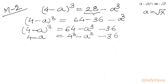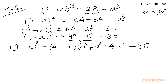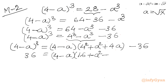Moving 36 to the left-hand side: 36 = (4³ - a³) - (4 - a)³. I apply the a³ - b³ identity to (4³ - a³), getting the factor (4 - a) in one bracket and (16 + 4a + a²) in the other. So 36 = (4 - a)(a² + 4a + 16) - (4 - a)³.